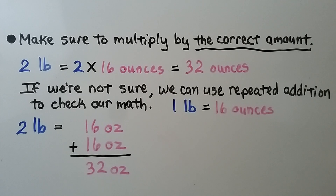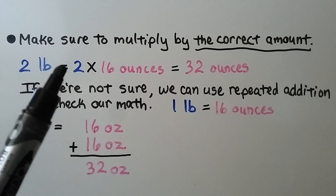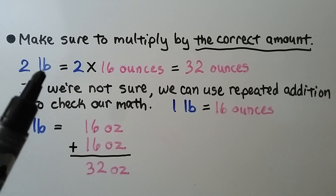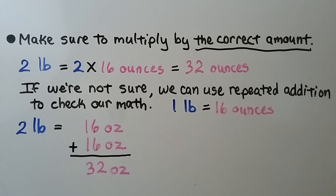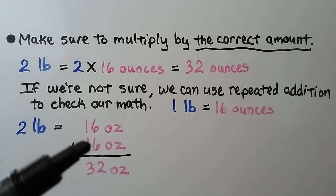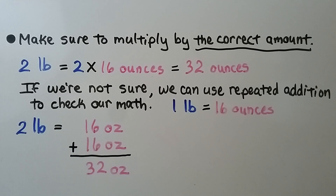Make sure to multiply by the correct amount. Two pounds equals 2 × 16 ounces = 32 ounces. If we're not sure, we can use repeated addition to check: 16 + 16 = 32. Two pounds is equal to 32 ounces.